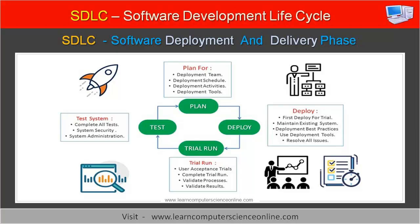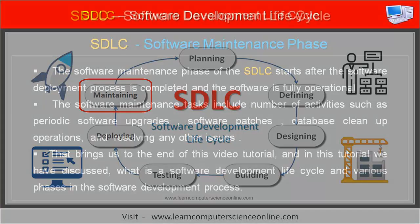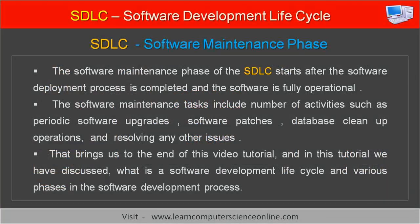The software has to complete user acceptance trials. The seventh and final phase in the software development process is the software maintenance phase. The software maintenance phase of the SDLC starts after the deployment process is completed and the software is fully operational. Maintenance tasks include periodic software upgrades, software patches, database cleanup operations, and resolving any other issues.